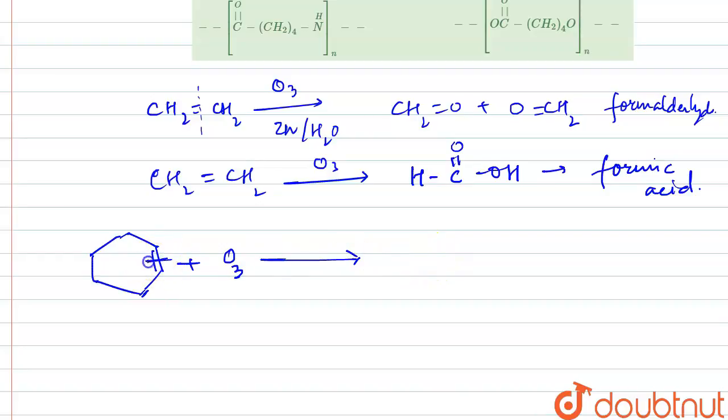We will break this bond and we will add OOH over this carbon. So it will form COOH and total number of CH2 is 1, 2, 3, 4. CH2 whole 4 and this carbon will also form COOH. This acid is a dioic acid and the common name of this acid is adipic acid.